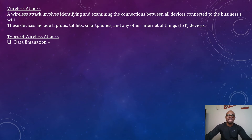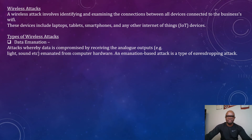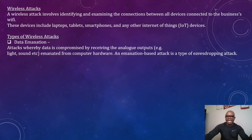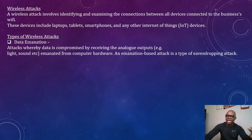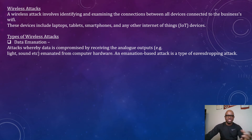Examples of types of wireless attack. One: data emanation. Data emanation is an attack whereby data is compromised by receiving the analog output — for example, the light or sound emanated from computer hardware. An emanation-based attack is a type of eavesdropping attack.